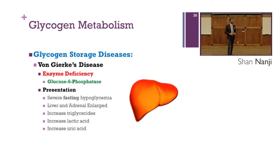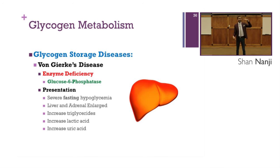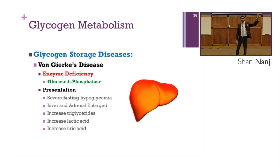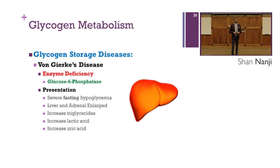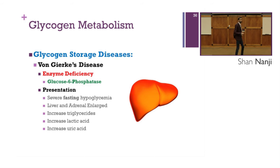Von Gerke's disease: the enzyme that is deficient is glucose-6-phosphatase. Presentation includes severe fasting hypoglycemia, enlarged liver and adrenals, increased triglycerides, increased lactic acid, and increased uric acid. A memory trick: Von Gerke's has a G, which kind of looks like a 6, so the deficient enzyme is glucose-6-phosphatase.